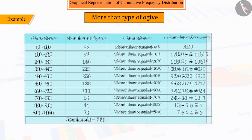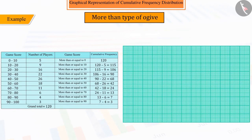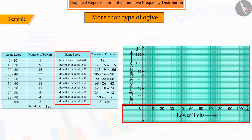To represent this obtained data graphically, mark the lower limits on the x-axis and cumulative frequencies on the y-axis, where the lower limits indicate the number obtained by players and cumulative frequencies indicate the number of players.